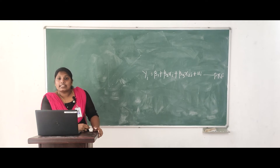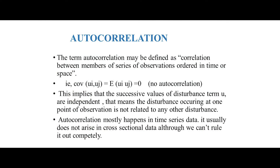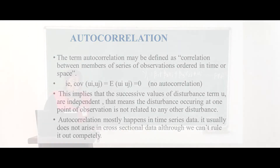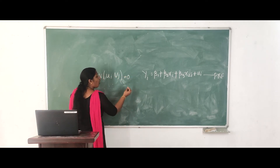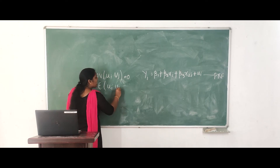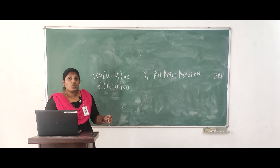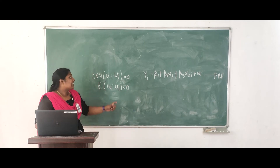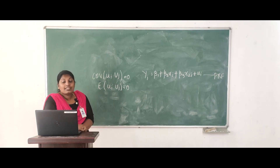The next important limitation is autocorrelation. Autocorrelation may be defined as the correlation between members of a series of observations ordered in time or space. The assumption is that the covariance of ui and uj equals zero — that is, E(ui·uj) = 0 — meaning successive values of the disturbance term u are temporarily independent. That is, the disturbance occurring at any point of time is not related to any other disturbance term. If the value of u in any particular period is correlated with its own preceding value, that leads to the problem of autocorrelation.